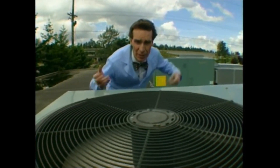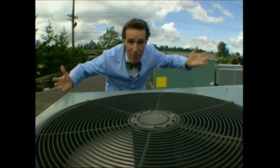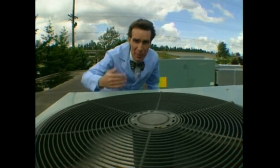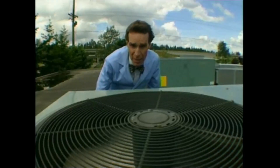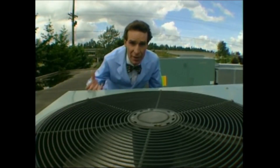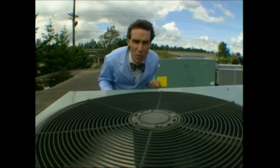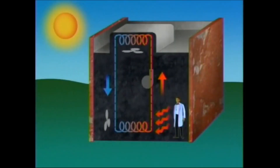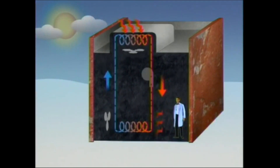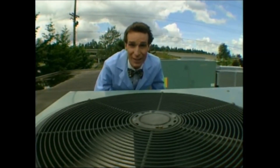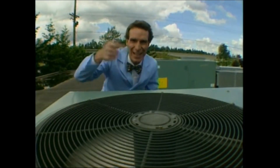A heat pump can pump heat from inside a building out into the environment, or from the environment into the building. All this pumping takes energy. A heat pump is like an air conditioner and a heater in one. On a hot day, the heat pump gathers heat from inside the building and forces it out into the warm environment. On a cold day, there is enough heat energy in the environment for the heat pump to gather it up and push it into the building.